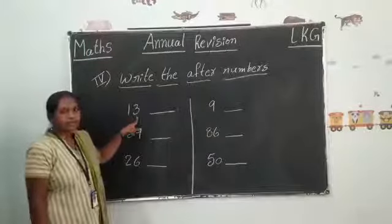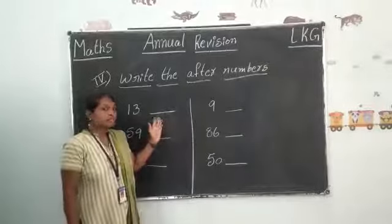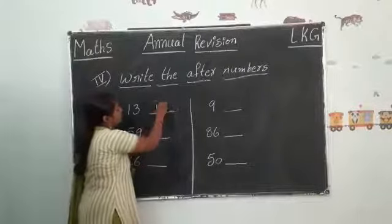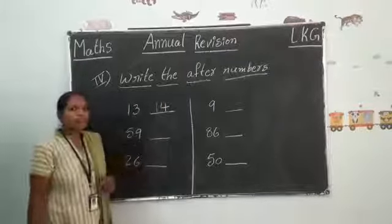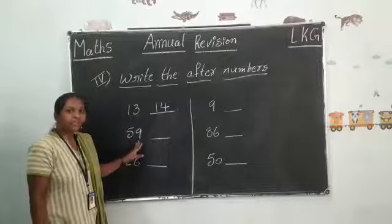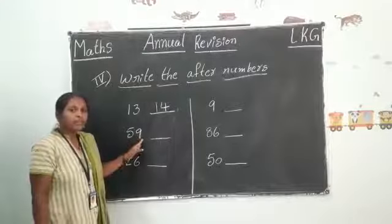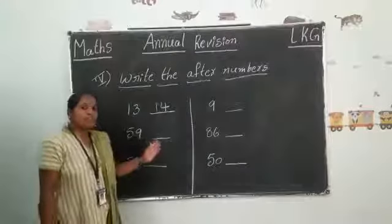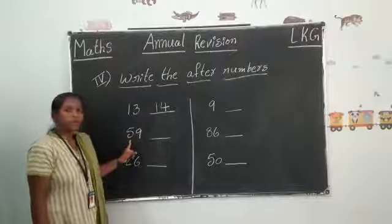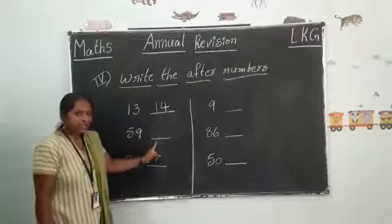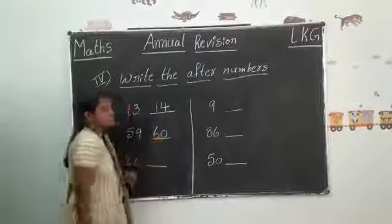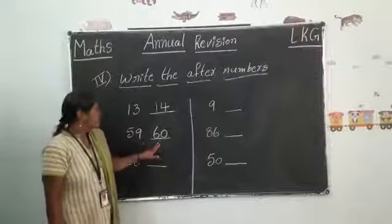What is this number? Thirteen. Now next. What is the after thirty? Yes. Thirteen. One four, fourteen. Now next. What is this number? Five nine, fifty nine. After fifty nine. Now look here children. What is this number? Five. After five, six. Six zero, sixty. So write here. Six zero sixty. After fifty nine, six zero sixty.